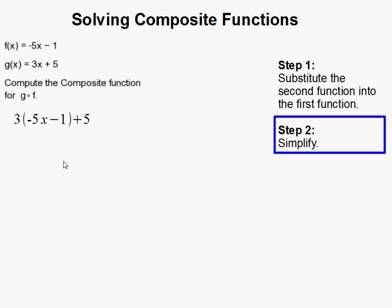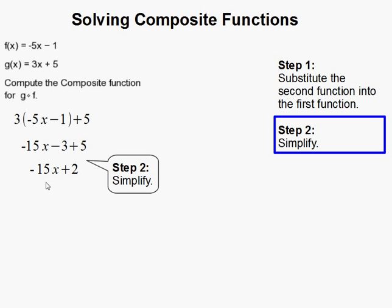And after that you simplify. So I use the distributive property, 3 times the negative 5x, 3 times the negative 1, to get negative 15x minus 3, and add the 5. And then combine these guys, and you get negative 15x plus 2.